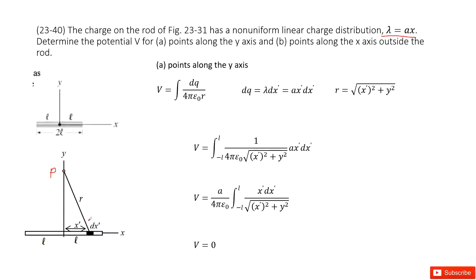Now, if we want to find the potential at P, we can see the charge carried by this small fraction dq over 4πε₀r. The r is the distance from position P to this charge location. And then this is x′, this is y.